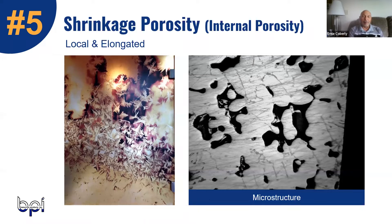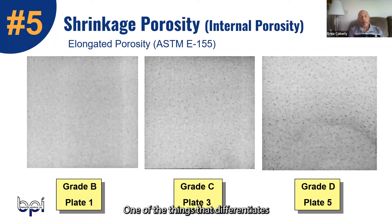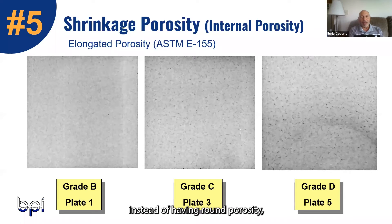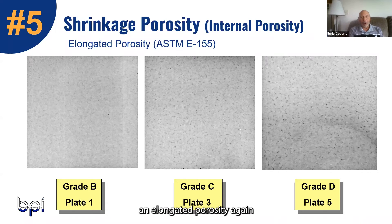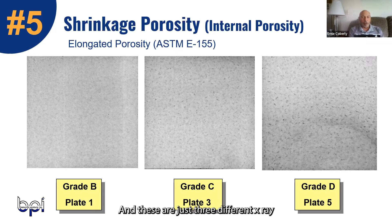One of the characteristics of shrinkage porosity is it tends to have a very slow seep or leakage. Another differentiating feature is it tends to appear elongated — instead of having round porosity, it tends to be an elongated porosity, again because it's trapped in between those interstices as we saw in the dendritic solidification.